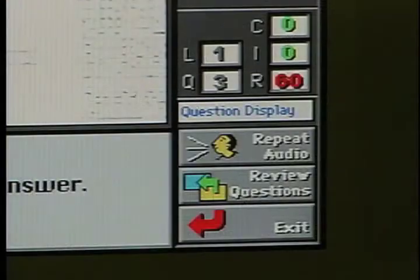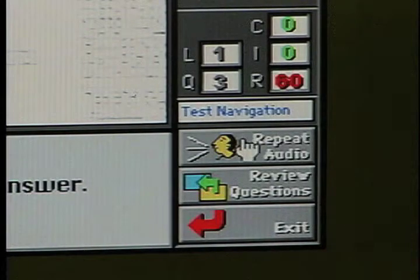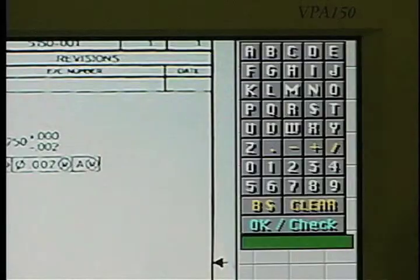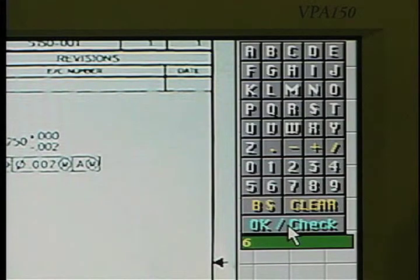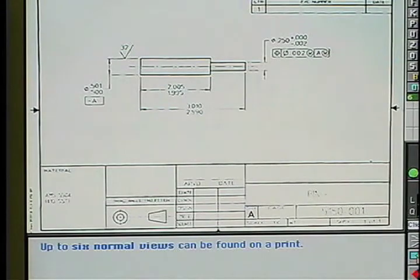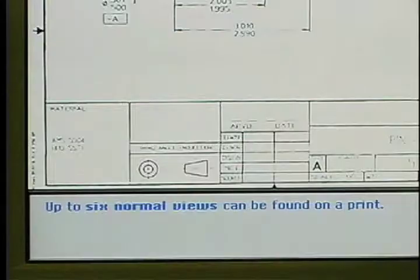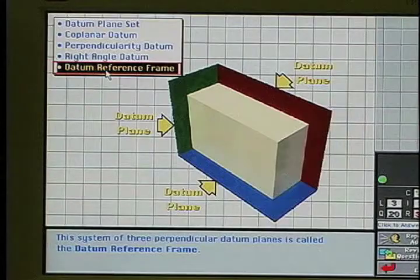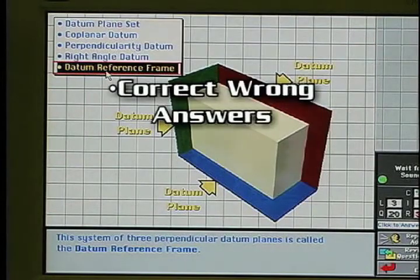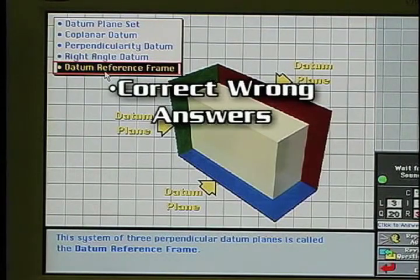If the person wants to hear the question again, the repeat audio button can be clicked with the mouse. Based on the answer selected, the computer provides either the correct or incorrect feedback. Correct answer. Up to 6 normal views can be found on a print. Whether the answer is right or wrong, an explanation of the correct answer is provided. This serves to correct a student's misunderstandings when a wrong answer is entered and to reinforce their correct answer.